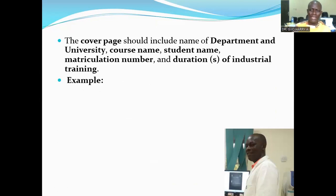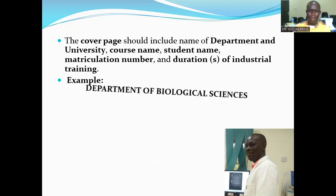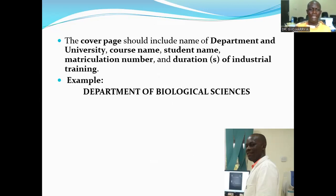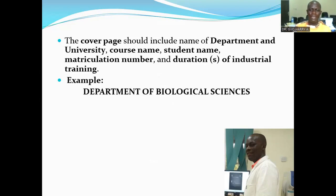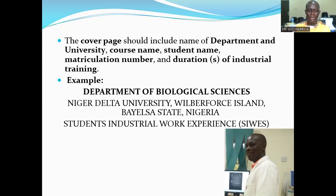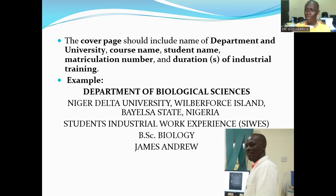Here's an example you can use. Department of Biological Sciences, Niger Delta University, River Force Island, Biasi State, Nigeria. Then industrial students' industrial work experience, the degree, then the name of the student — for instance, James Andrew — and the matriculation number of the student.